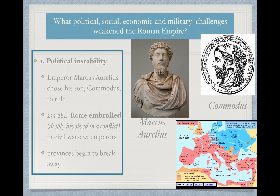However, that wouldn't last forever. Notice I've shifted the essential questions at the top — draw a line across your notes or mark this shift somehow. This Pax Romana was not meant to last forever. We're now going to start laying the groundwork for what brought down this massive Roman Empire — what are the political, social, economic, and military challenges that began to weaken it? The first is political instability. The series of so-called good emperors ended when Emperor Marcus Aurelius chose his son Commodus to rule, who was a very ineffective and unqualified leader. Between 235 and 284, Rome became embroiled — deeply involved in conflicts and civil wars — and during that period they had 27 different emperors.